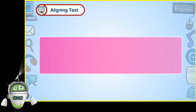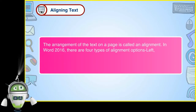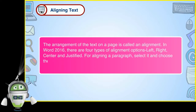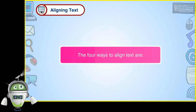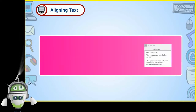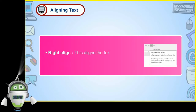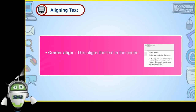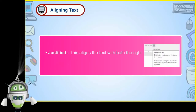Aligning text. The arrangement of the text on a page is called an alignment. In Word 2016, there are four types of alignment options: Left, Right, Center and Justified. For aligning a paragraph, select it and choose the way we want to align it from the four alignment options on the paragraph group. Left align: this aligns the text along the left margin. Right align: this aligns the text along the right margin. Center align: this aligns the text in the center of the left and the right margins. Justified: this aligns the text with both the right and the left margins.